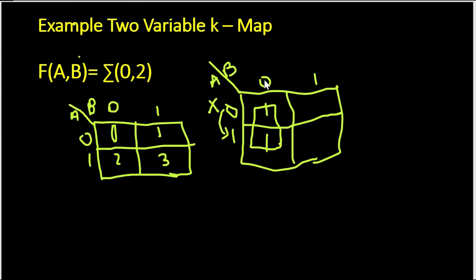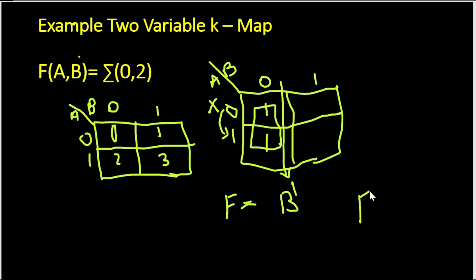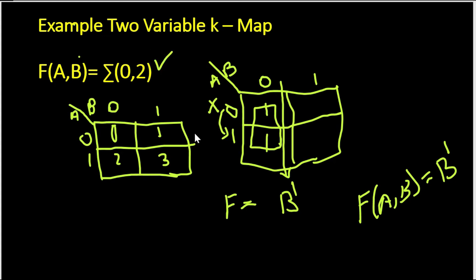The value of B is 0 throughout this pair, so you have to check according to the group. Since B is 0, it will be marked as B dash (B complement). So the value of the function will be F(A, B) = B'. So B' is the minimized form of this 2 variable KMap question.